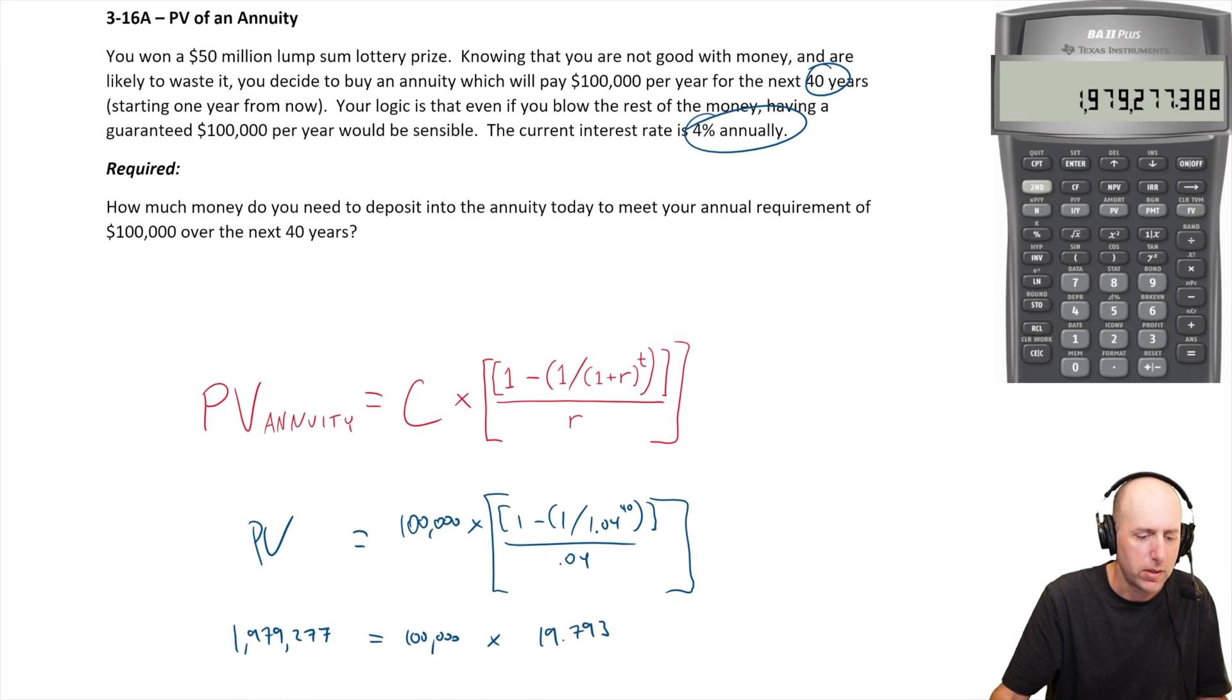So I won $50 million, congratulations to me. If I want to lock in 100 grand a year for the next 40 years, basically the rest of my life, that's how much money I need to set aside right now. So that is the PV of the annuity. We've answered the question.